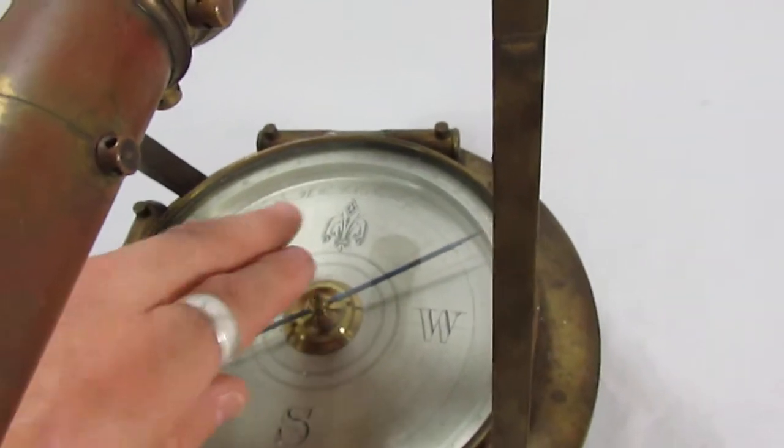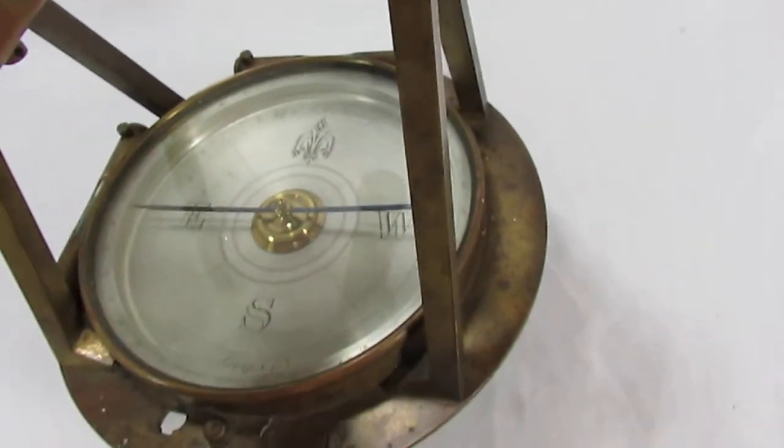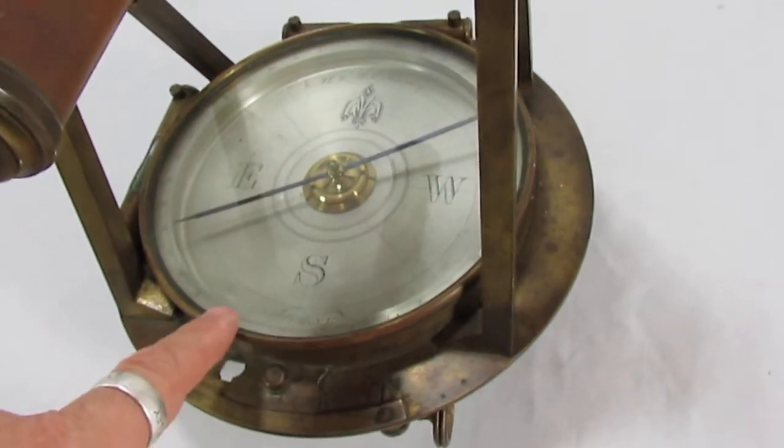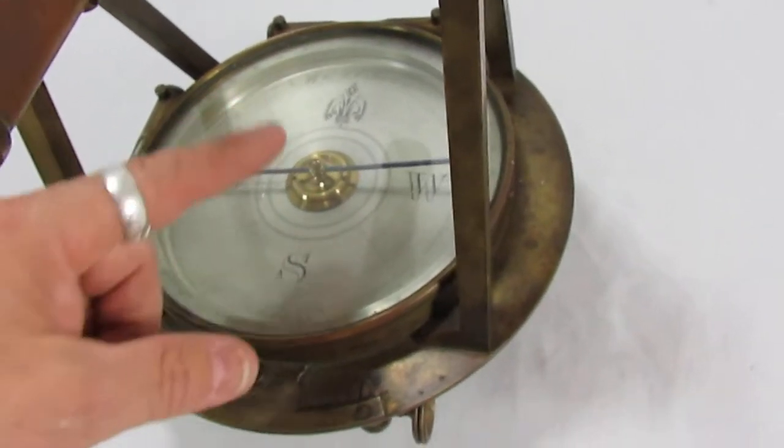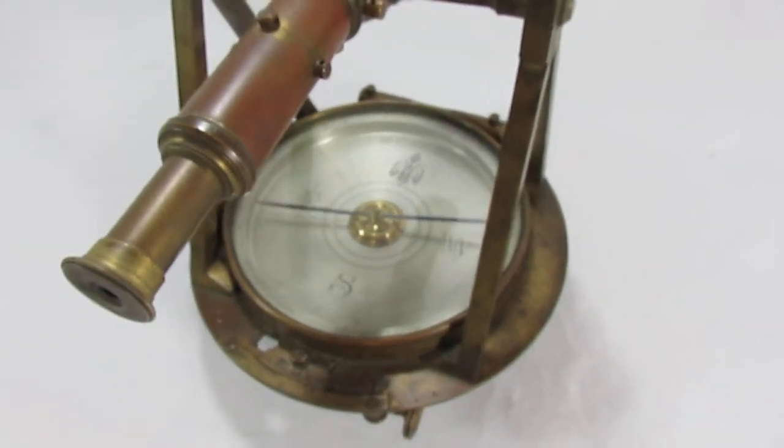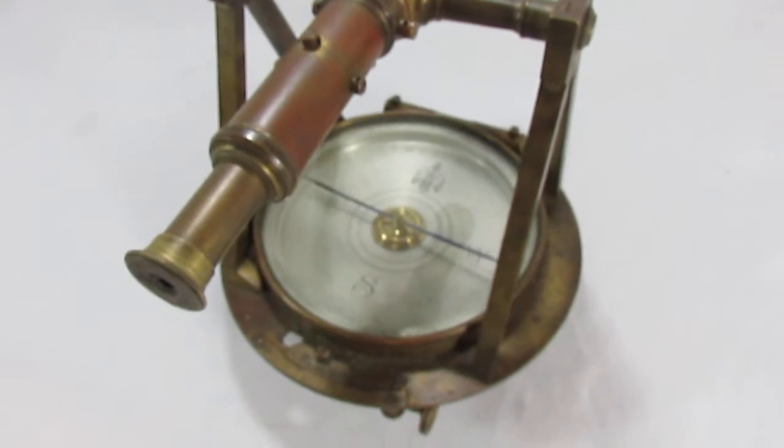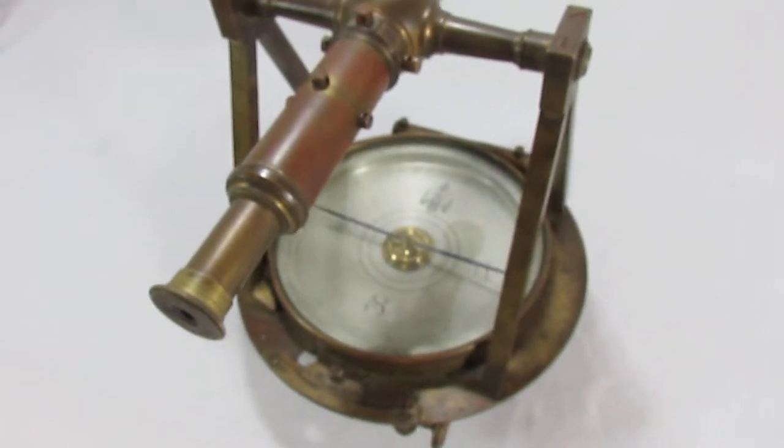Based on the font, the engraving, the depth of the engraving, the style of the face, all points to an early mid-1800s, 1850s, we believe, era compass and transit here.